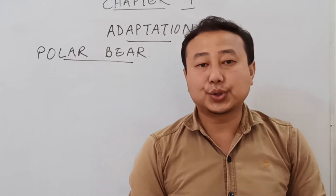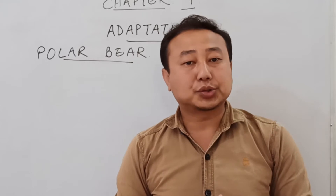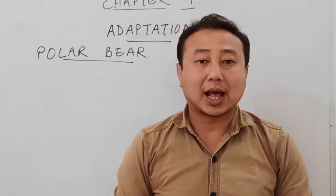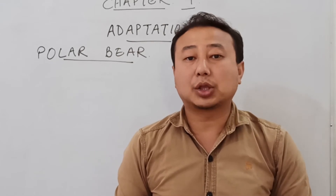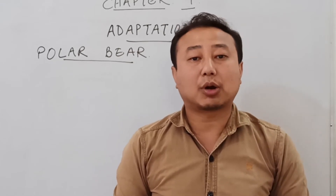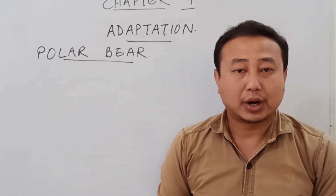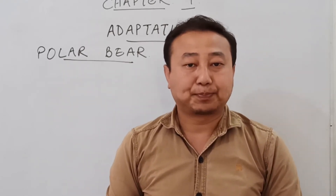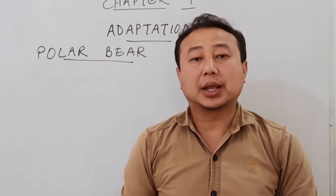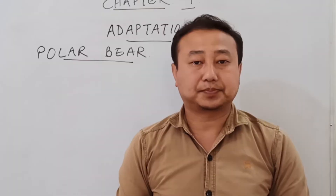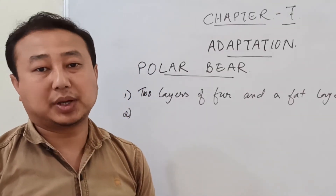Above the fur, polar bears also have a thick layer of fat, which also acts as an insulator, preventing heat energy produced in their body from escaping to the atmosphere. With the help of these two thick layers of fur and a thick layer of fat, the polar bear is able to stay warm in that cold climatic region.